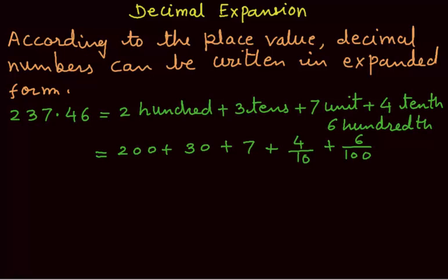This expanded form can be written in this way as 200 plus 30 plus 7 plus 0.4, and 6 over 100 can be written as 0.06.